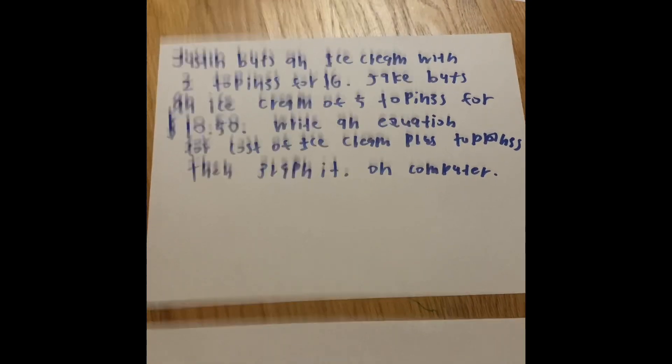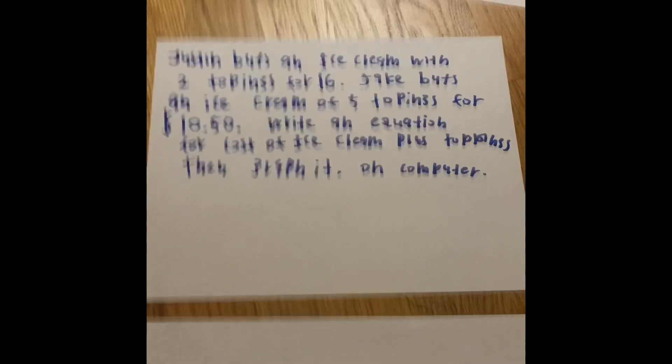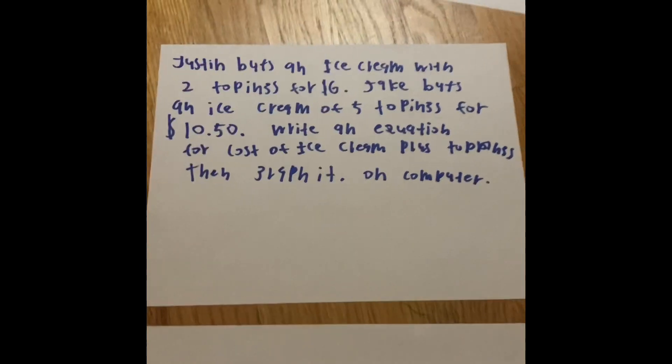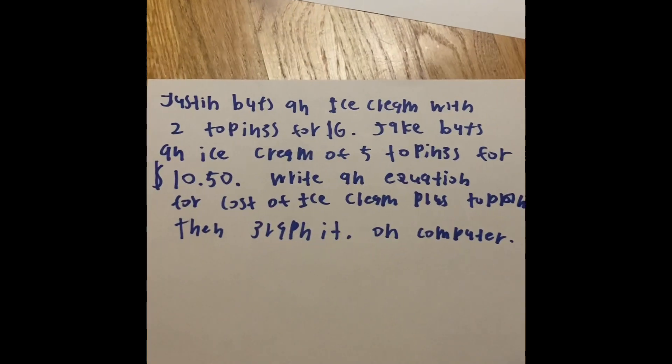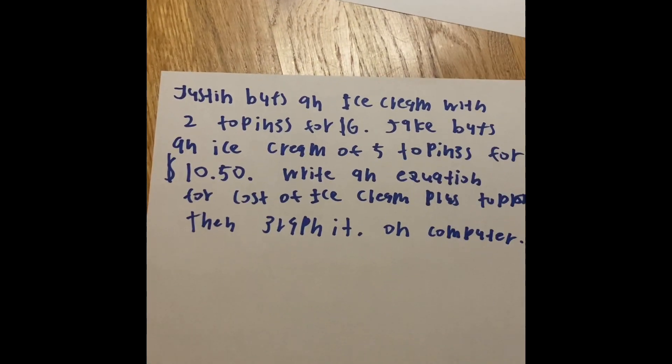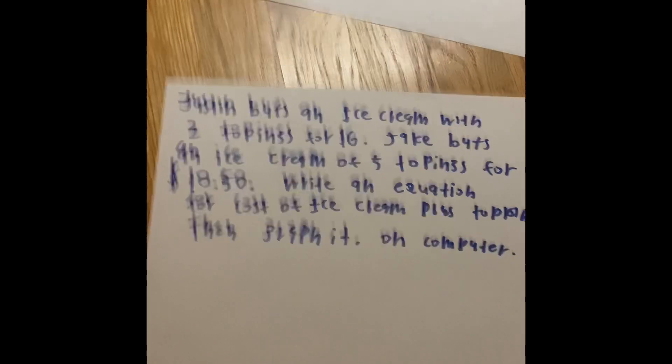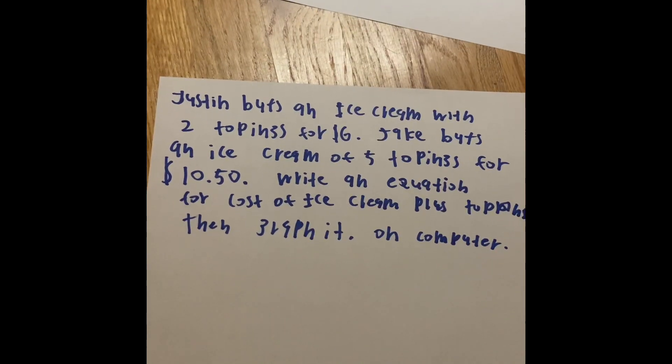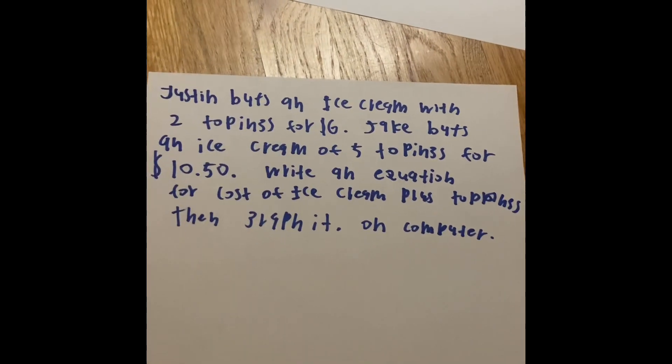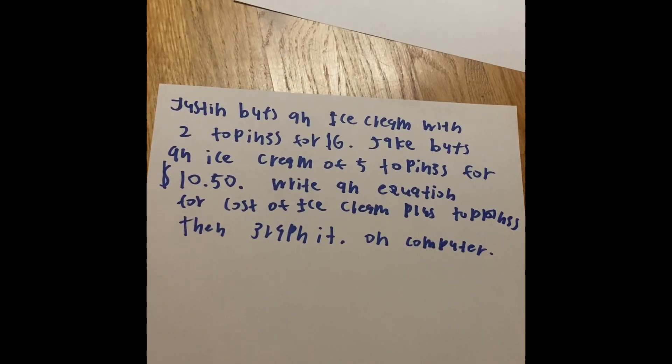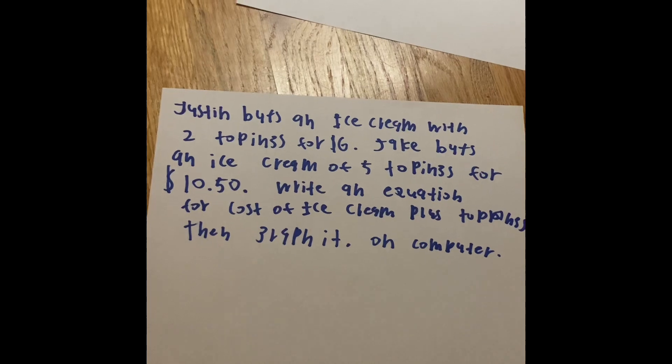But what we're going to do is use a real-life situation and see what we can do about it by making an equation and then graphing it. Justin buys an ice cream with two toppings for $6. Jake buys an ice cream at the same place with five toppings for $10.50. Write an equation for the cost of ice cream plus the toppings, then graph it on the computer.